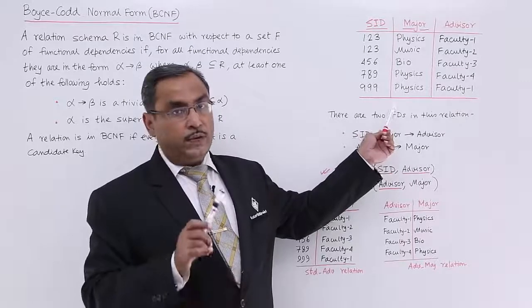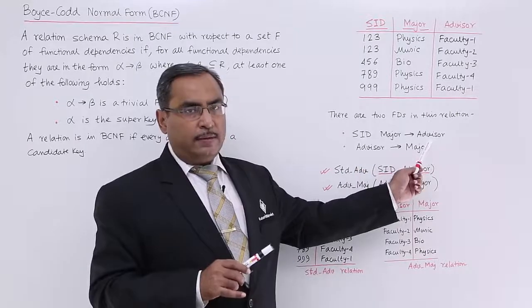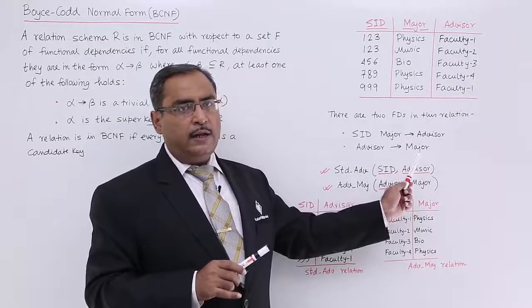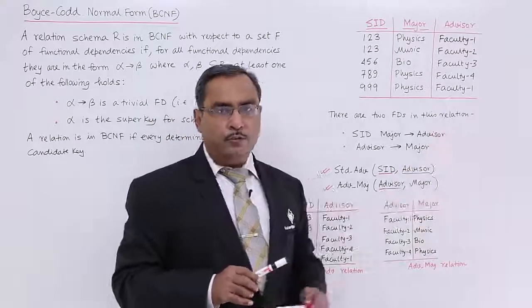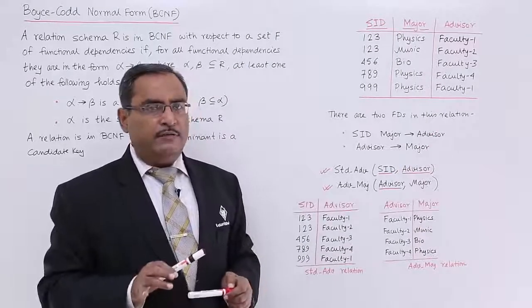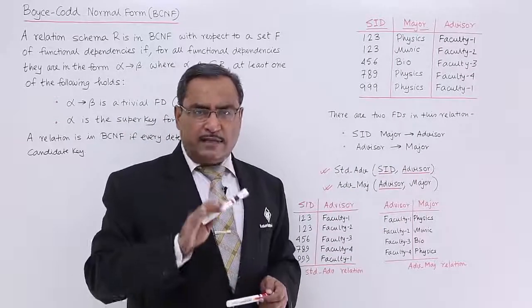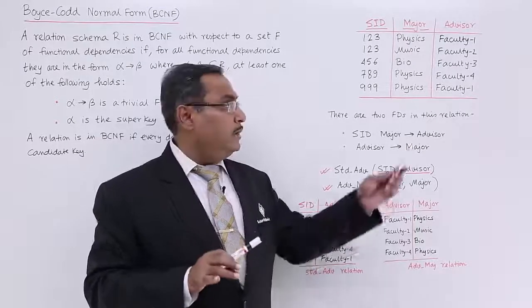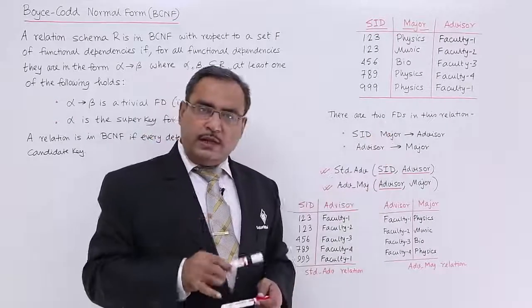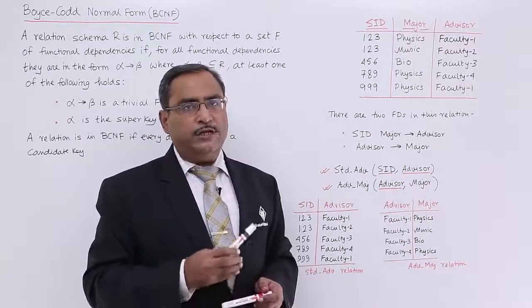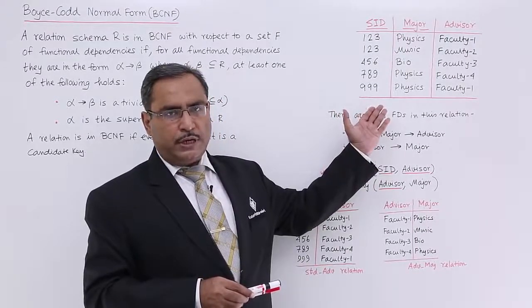This relation is also in 3NF. Student ID and major determines advisor, but advisor is determining a prime attribute — not another non-key attribute — so there is no transitivity dependency here. Therefore, this relation is in 3NF. But still, it is having insertion, deletion, and updation anomalies.